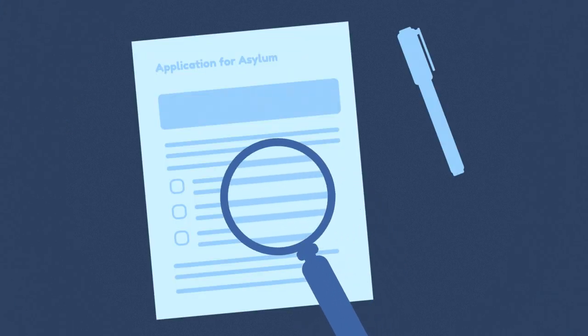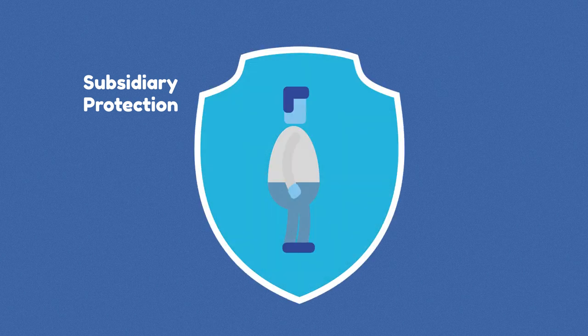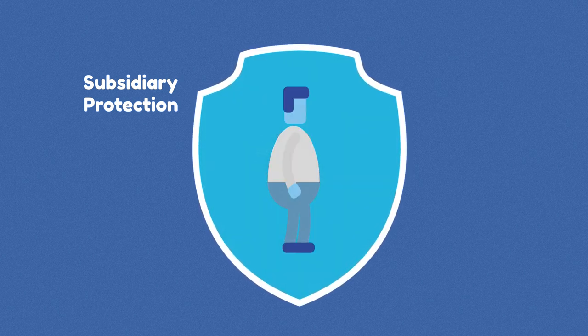The asylum application is examined as to whether refugee status or subsidiary protection apply. An asylum seeker is granted subsidiary protection if he or she is treated contrary to human rights in his or her home country.